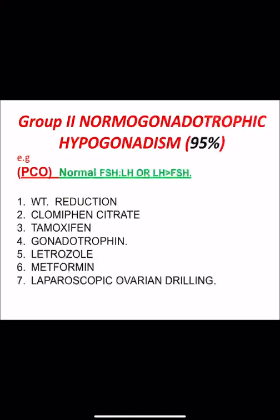Number three, tamoxifen 10 mg from day 2 to day 6 of the cycle. Number four, gonadotrophins — if there is no response to oral ovulation induction, injectable drugs are given. Gonadotrophins come in various types, sometimes containing FSH and LH, sometimes pure FSH, given daily from day 2 or on alternate days, or combined with oral ovulation induction such as clomiphene or letrozole. Side effects of gonadotrophins include multiple pregnancy and ovarian hyperstimulation syndrome.